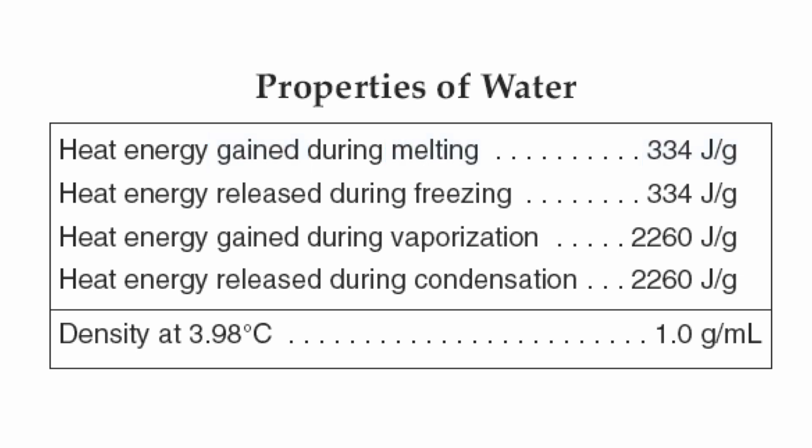The second phase change is freezing. Freezing is going to need the same quantity — 334 joules per gram. Freezing is going to be liquid water changing to solid ice, but in this case energy is going to be given off. It's going to be released.